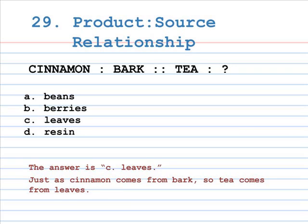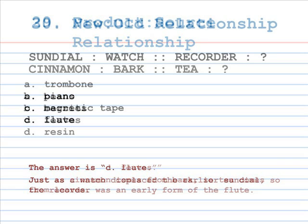Number 29: product is to source relationship. Cinnamon is to bark, as tea is to A. Beans, B. Berries, C. Leaves, D. Resin. The answer is C, Leaves. Just as cinnamon comes from bark, so tea comes from leaves.